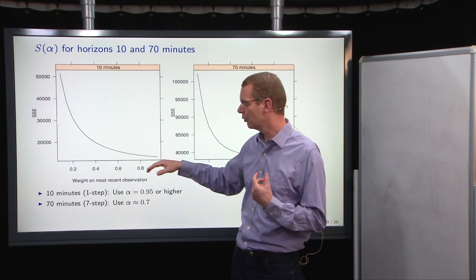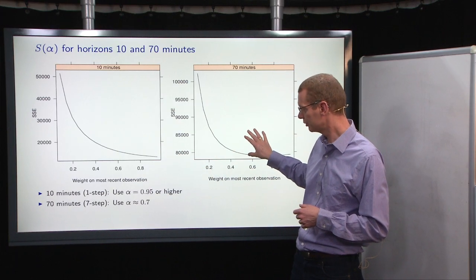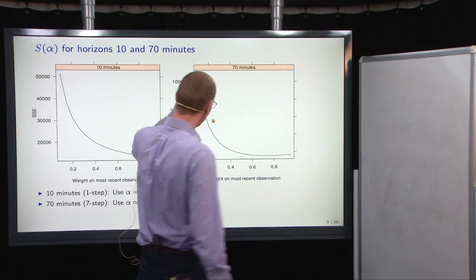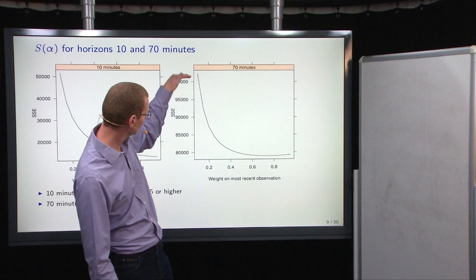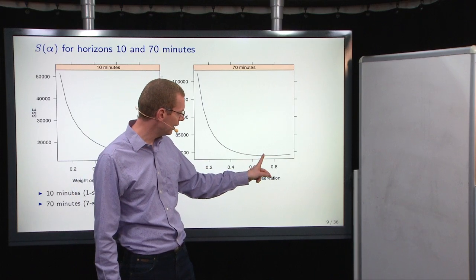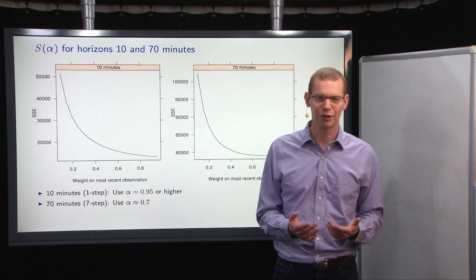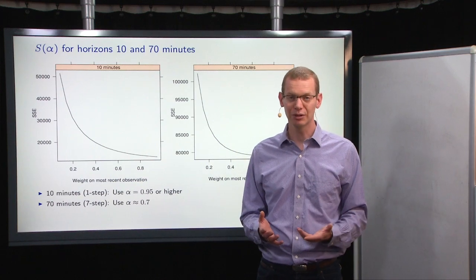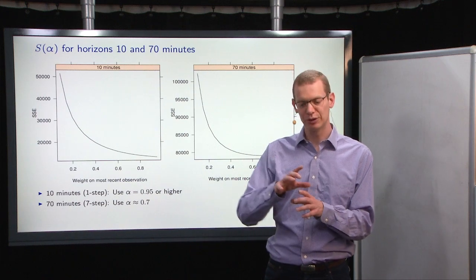Now, if we look at the 7-step prediction, up to 7 here, and we do the same thing, what we see is that the minimum here is quite flat compared to the range here, but the optimal value is around 0.7. So that means we put 70% weight on the most recent observation, and then 30% weight on the previous estimate.